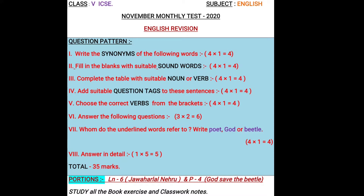And third one, complete the table with suitable noun and verb followed by question tags. And fifth Roman numeral is choose the correct verbs from the brackets. And sixth Roman numeral is answer the following questions. You will be asked 3 questions from lesson 6. Each question carries 2 marks, so you will be getting 6 marks in this part. And Roman numeral 7, whom do the underlined words refer to? You should write whether the underlined words refer to the poet, God, or Beetle. You can learn this part from the poem.